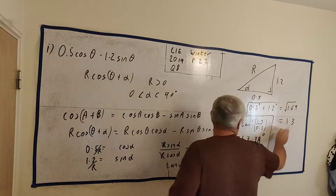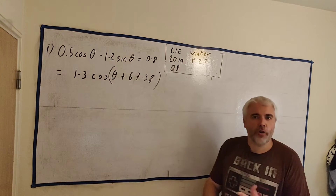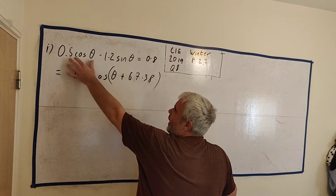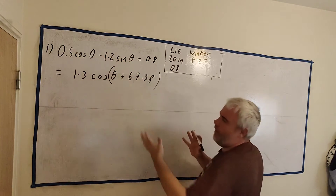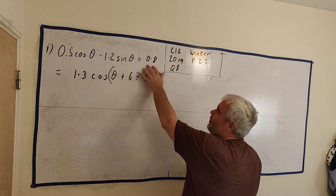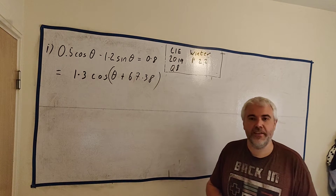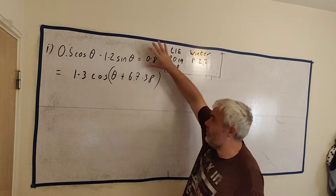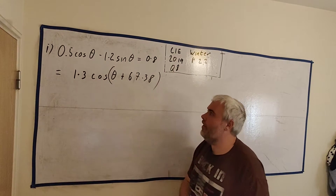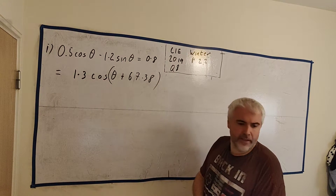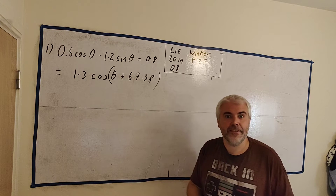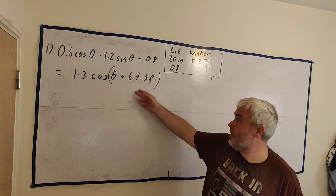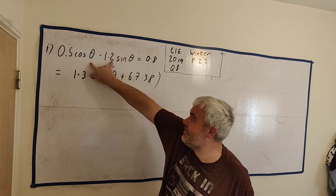Let me keep these numbers here because they're going to be important for part 2. Part 2 of the question asks us to solve for θ when the two original terms equal 0.8, with θ between 0 and 360 degrees. The word 'hence' in the question was a clue to use part 1. Part 1 told us that the original expression equals 1.3·cos(θ + 67.38°).